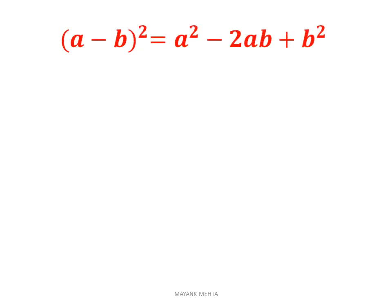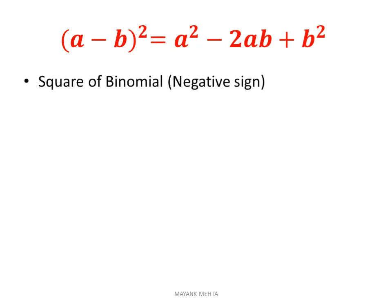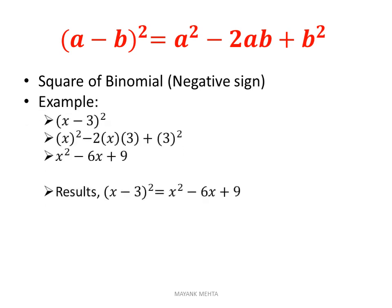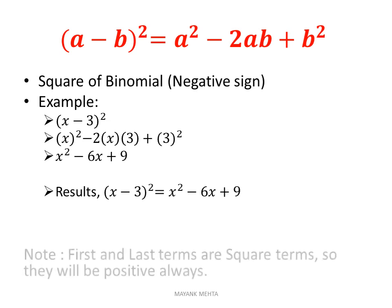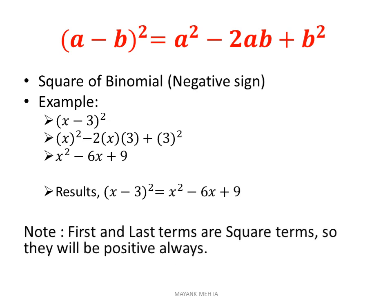Our next identity is (a−b)², which equals a² − 2ab + b². This is also a square of a binomial but with a negative sign between the terms. For example, (x−3)²: the first term is x², the middle term will be negative because there is a minus sign between the two terms, so it is −2 × x × 3, plus 3². Expanding gives x² − 6x + 9. Again, the first and last terms are square terms, so they are always positive.